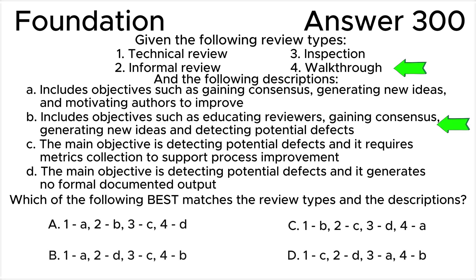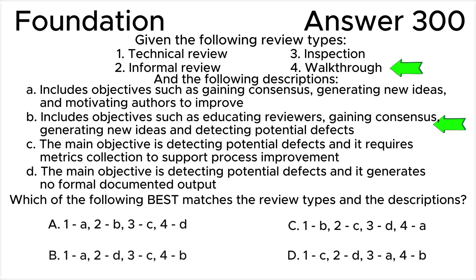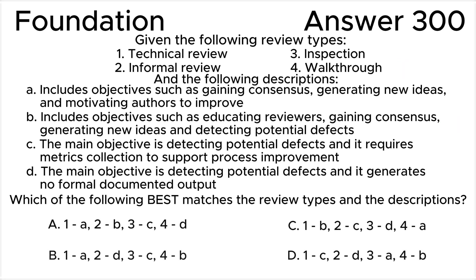Review type four — Walkthrough. Led by the author, this type of review serves various objectives such as evaluating quality and building confidence in the work product, educating reviewers, gaining consensus, generating new ideas, motivating and enabling authors to improve, and detecting anomalies. Reviewers might perform an individual review before the walkthrough, but this is not mandatory. This matches description B, which includes objectives such as educating reviewers, gaining consensus, generating new ideas, and detecting potential defects.